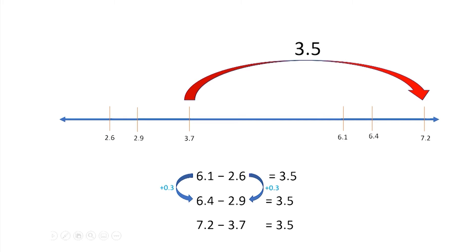Did you see this? 6 and 1 tenth plus 3 tenths is 6 and 4 tenths. And then, 2 and 6 tenths also plus 3 tenths is 2 and 9 tenths. I added 3 tenths to both sides and then my answer didn't change.